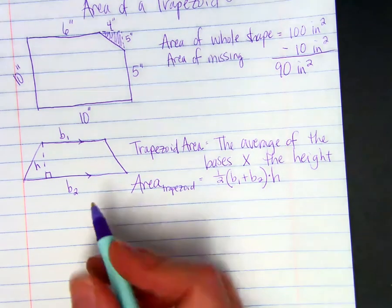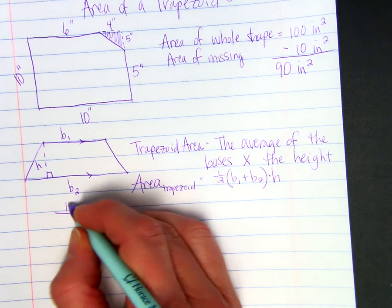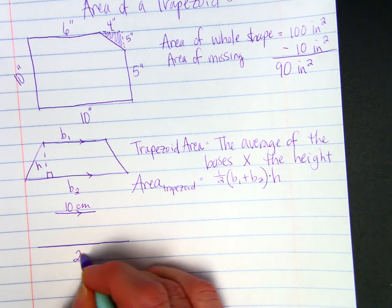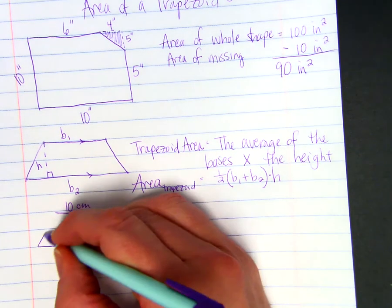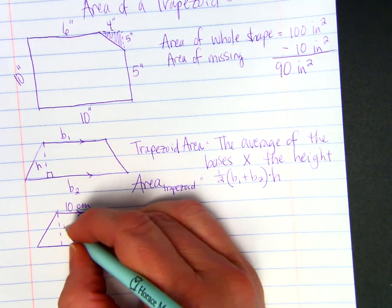So for an example, if we had a trapezoid: the short side is 10 centimeters, the long side is double that, and we're going to say that the height is 5 centimeters.